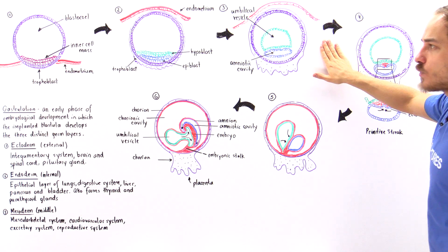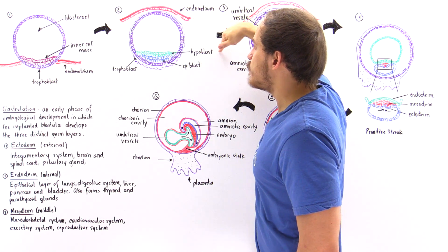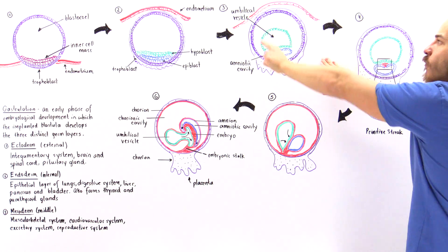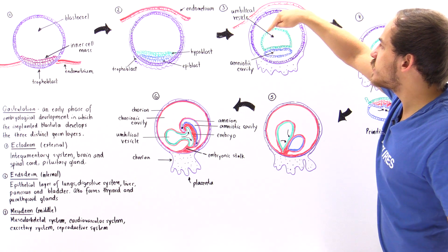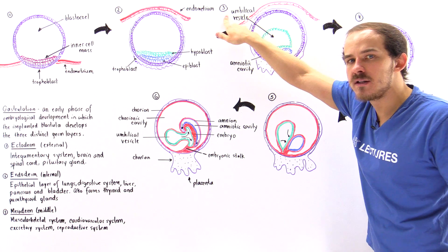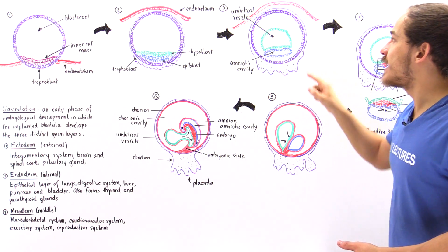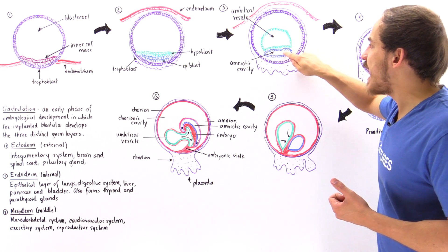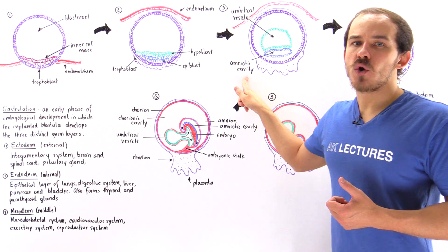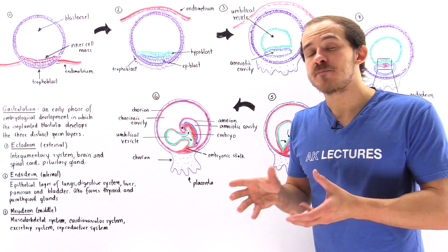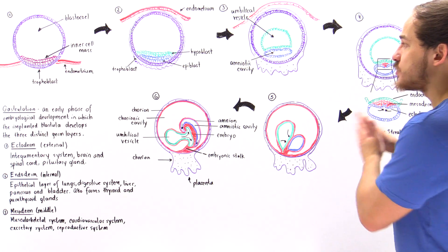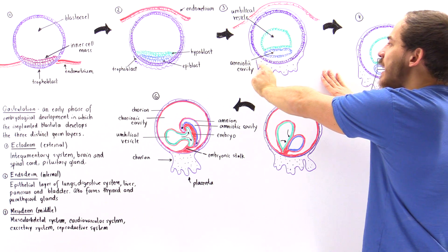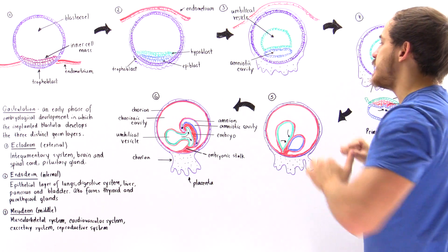Going from diagram two to diagram three: the upper portions of the hypoblast and epiblast migrate upward toward one pole. The green portion develops into the umbilical vesicle — known as the yolk sac in non-humans — which eventually becomes part of the umbilical cord system. We also form the amniotic cavity, created by the epiblast cells, which is where the fetus will be housed. Additionally, the trophoblast extension — the purple section — will develop into the chorion and ultimately into the placenta.